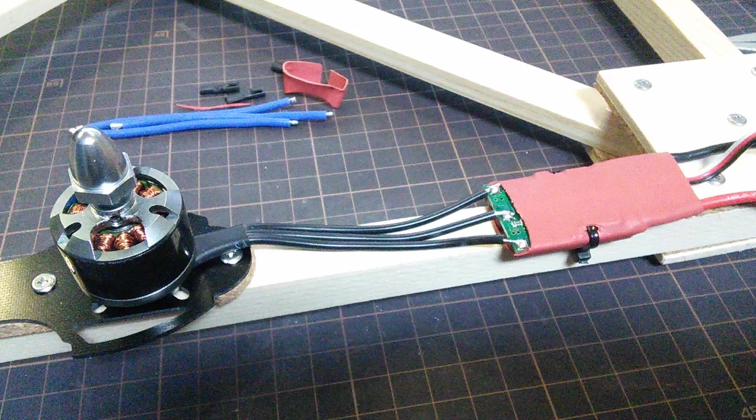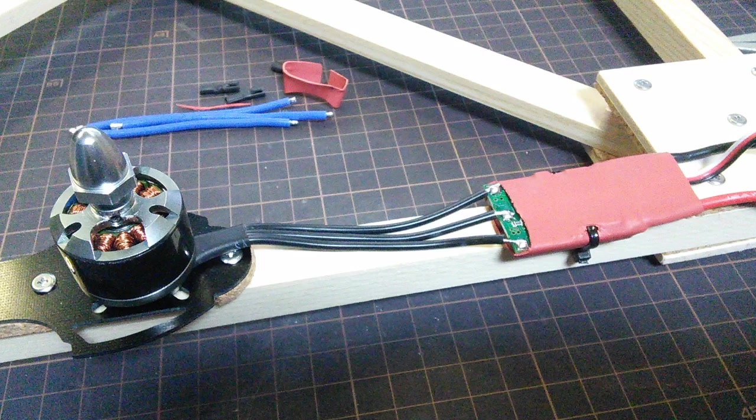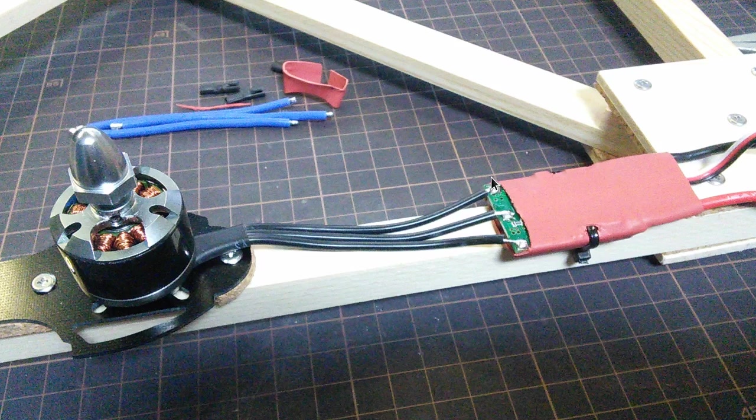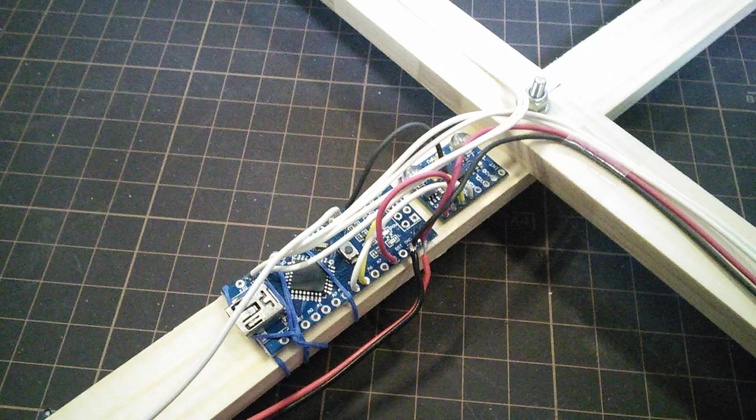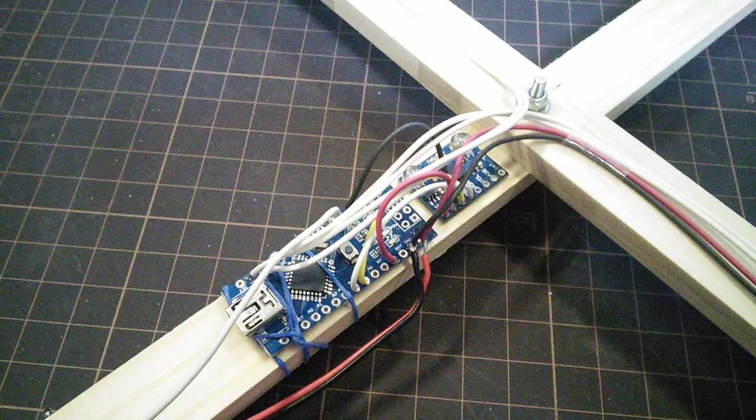Originally I had planned to put the ESCs on top of the plates at each corner but there wasn't really enough room and it was going to be awkward to mount them. So I decided to just zip tie them to the beams on each side instead. And another reason that that was helpful was because when I put them there the wires from the motor were now long enough to reach the ESCs directly so I just soldered them straight onto there.